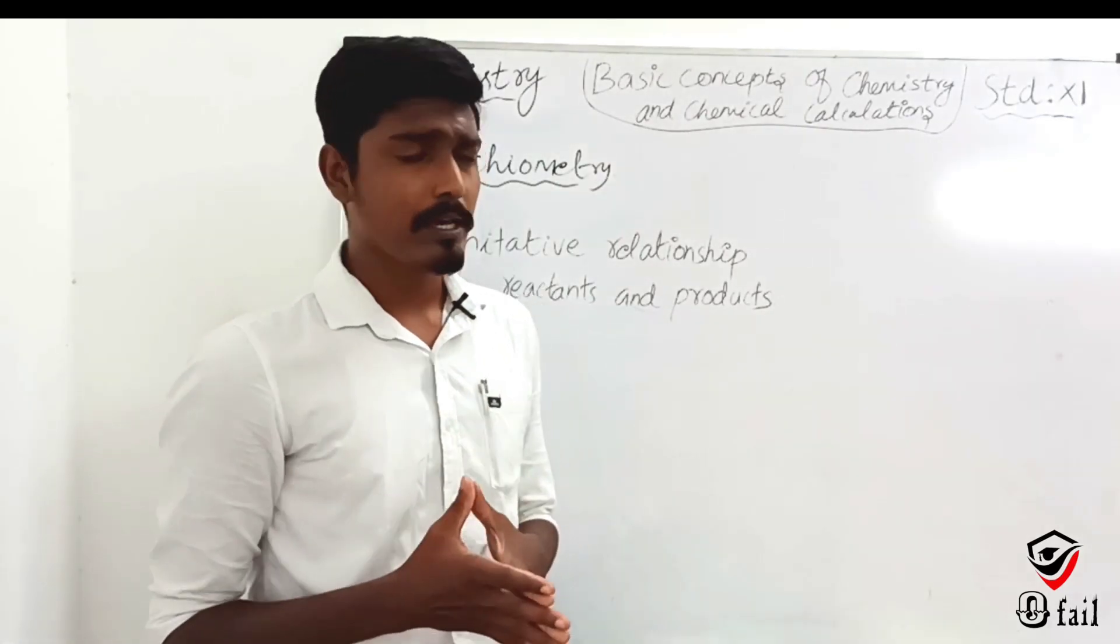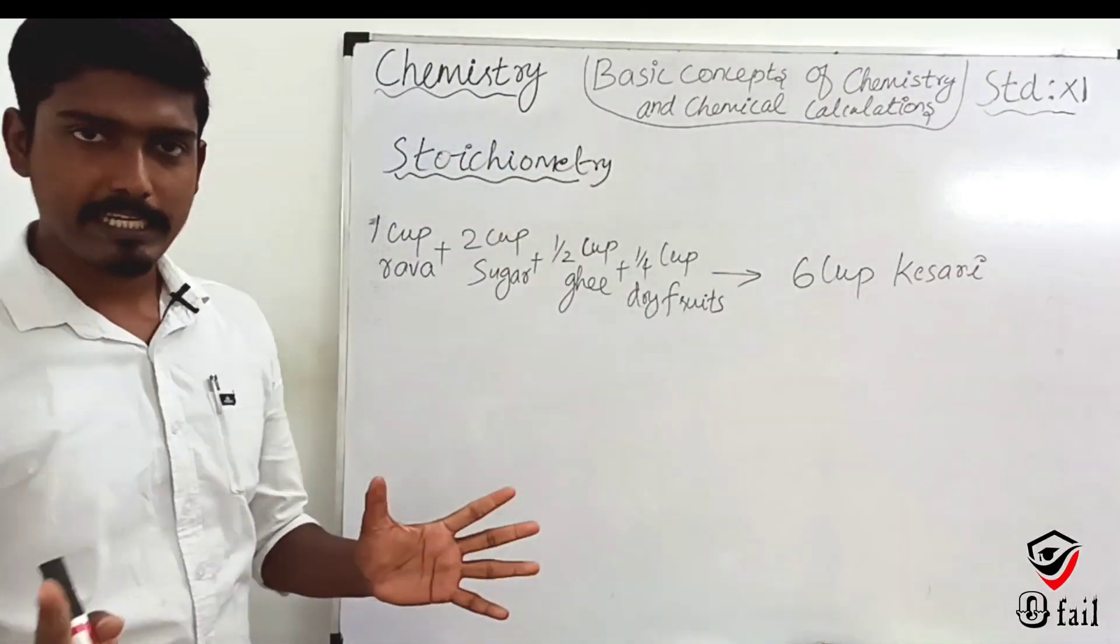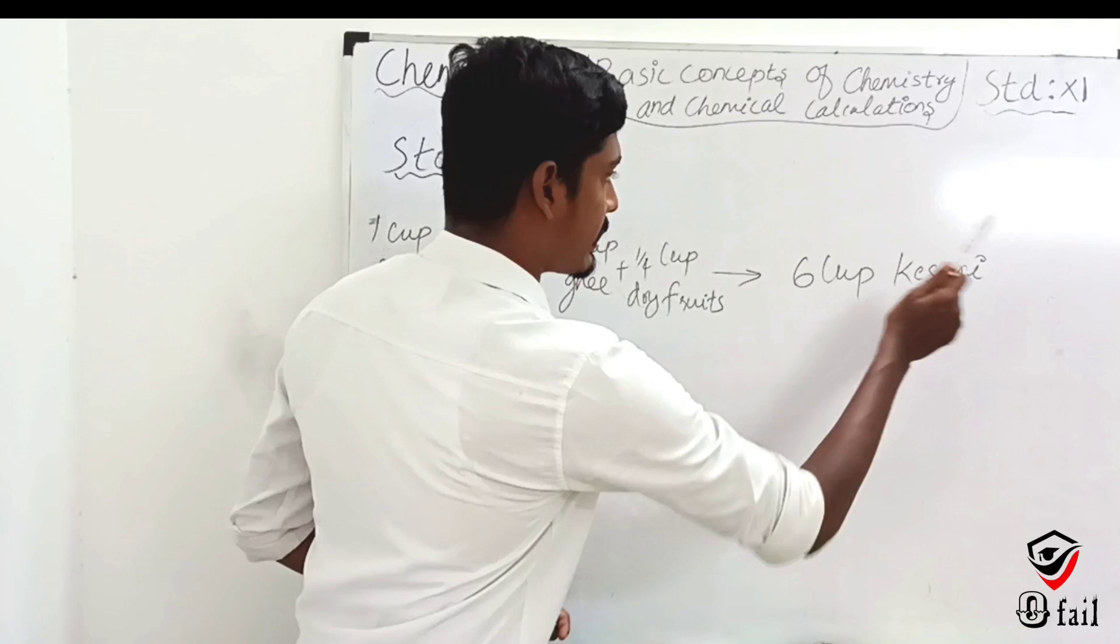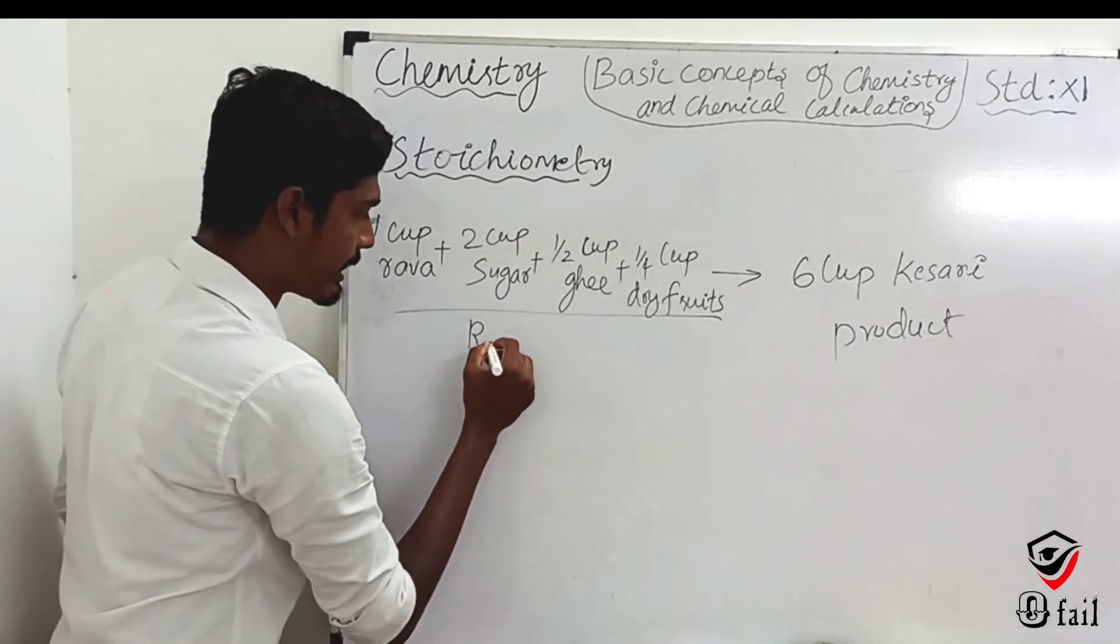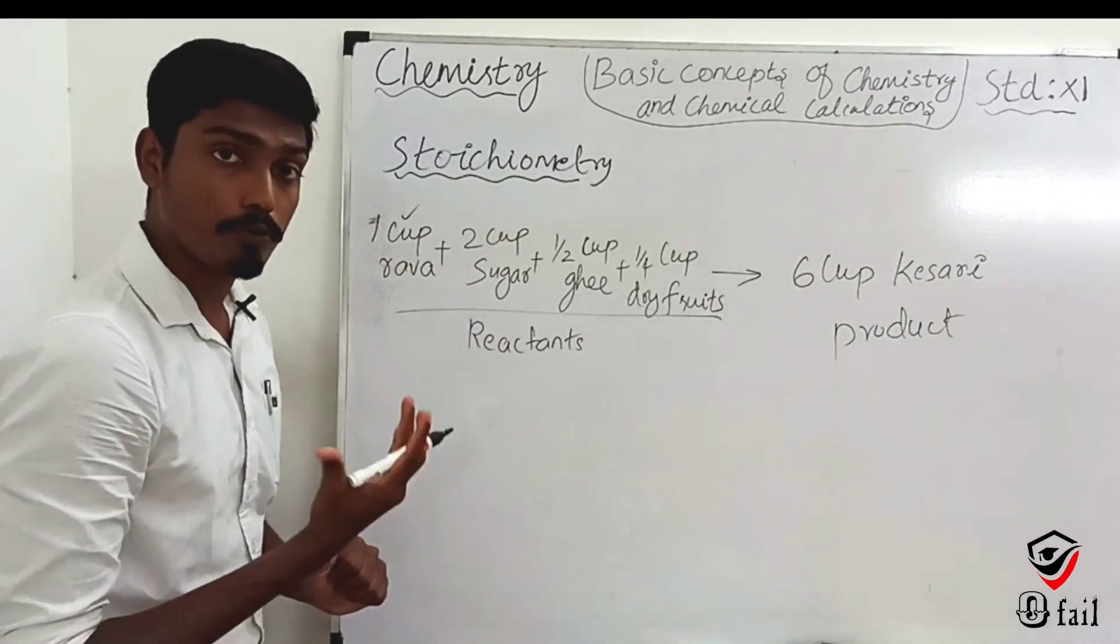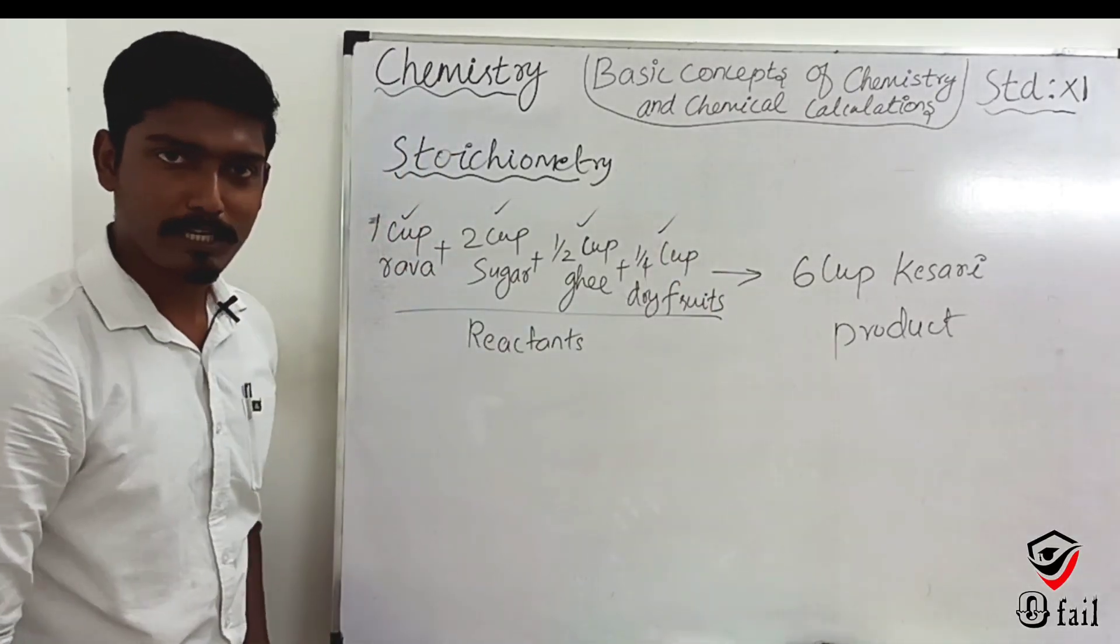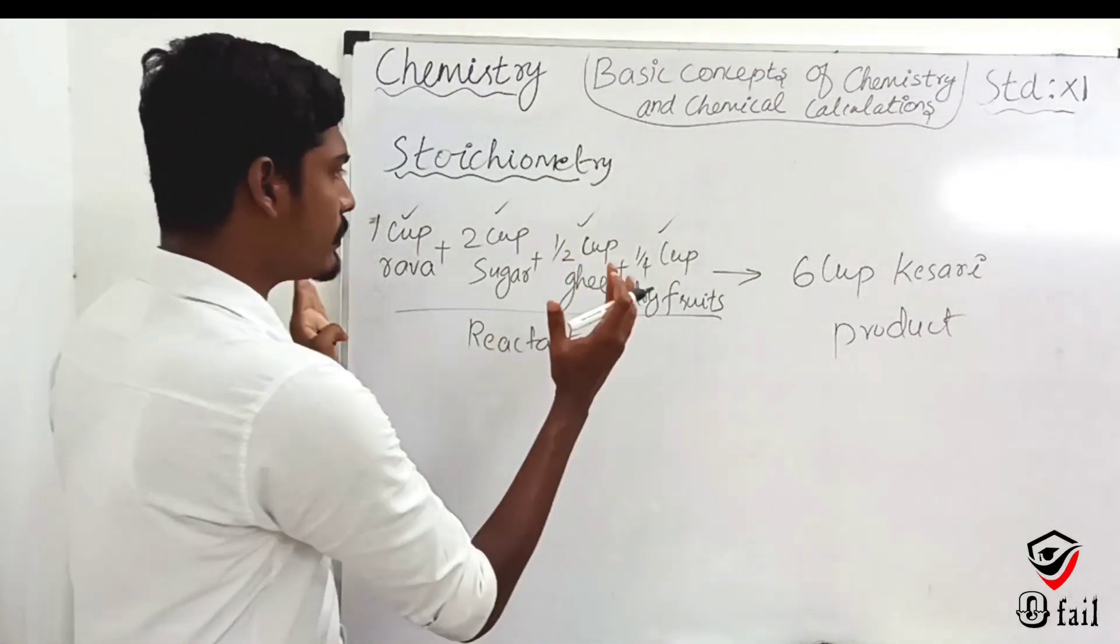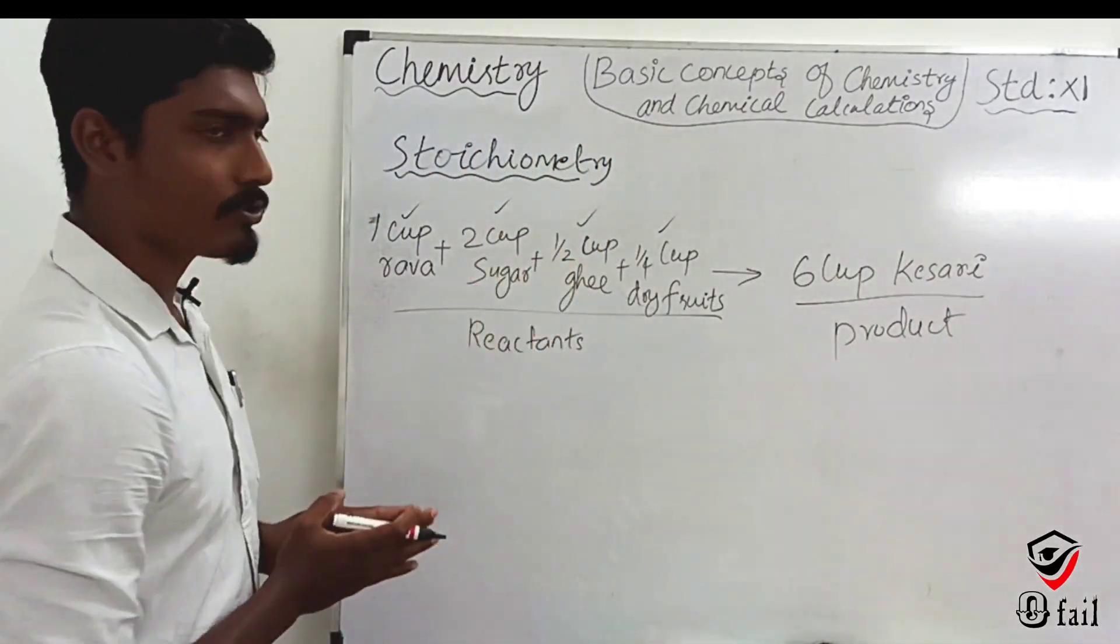Let me give you a simple example. If we want to make kesari, say 6 cups of kesari as our product, what reactants do we need? We need 1 cup rava, 2 cups sugar, 1.5 cups ghee, and 0.25 cups dry fruits. If we have these reactants, we get the product. This is stoichiometry.